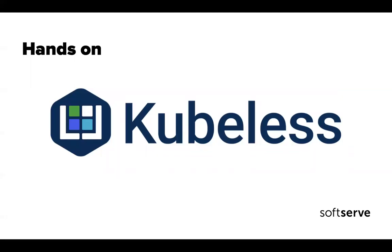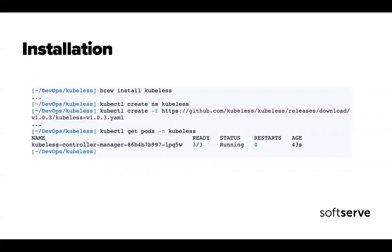I'm pretty sure that most of you are aware of how serverless things on top of Kubernetes really work, but maybe it's worth it to show and be on the same page. First of all, installation. As you can see, I'm using brew, which means I have a MacBook, but it doesn't really matter in this case. Installation is pretty straightforward. The whole Kubeless thing is just one pod on our Kubernetes with three containers inside — one of them is Istio, but whatever. So installation is really easy; it takes a couple of minutes and we have serverless on our Kubernetes.